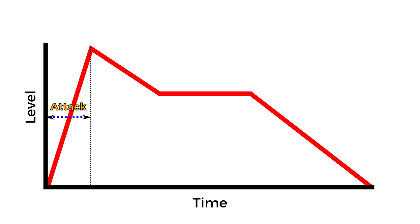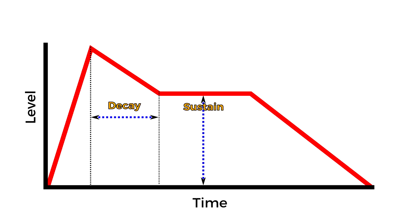It's best to consider the next two stages, D and S, together. D is for decay, and it represents the time taken, once we've got to the highest peak, for the envelope to drop down to the level defined by S, which stands for sustain. Again, we're talking about time taken, so a low decay value means that we take a short amount of time to drop down to the sustain level, whereas a high value means we drift down more slowly. The envelope then sits at the sustain level for as long as we continue to play our note.